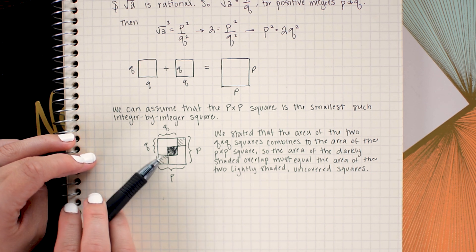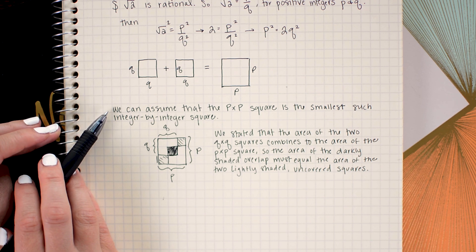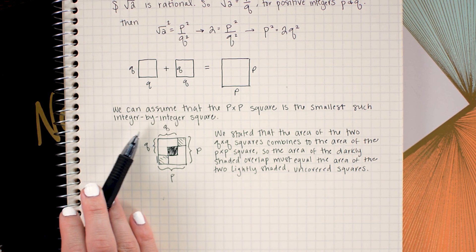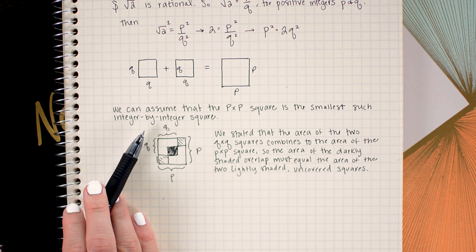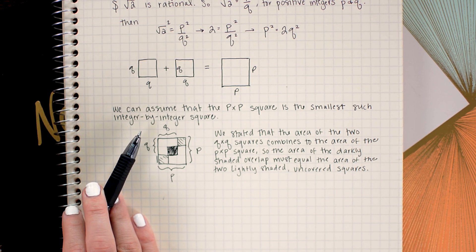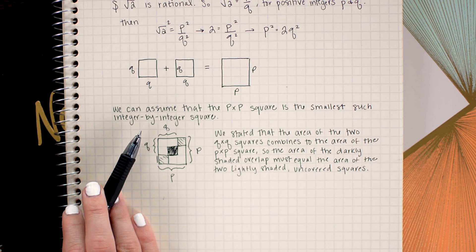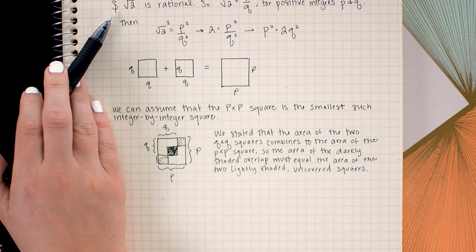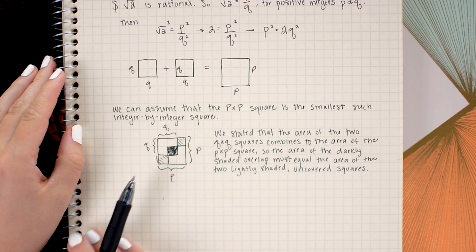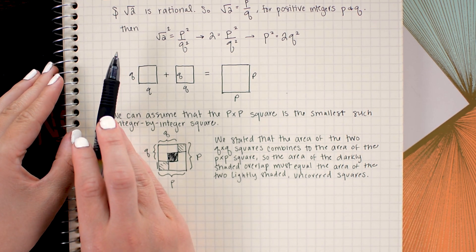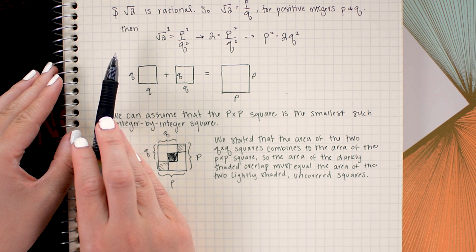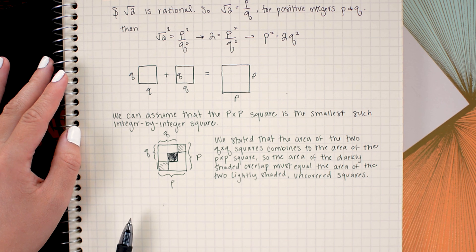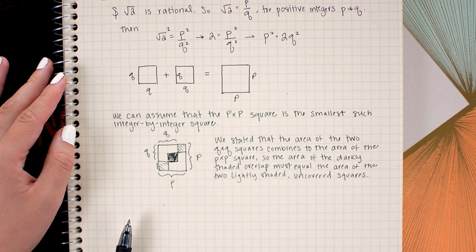This of course contradicts our assumption up here that our p by p square was the smallest such integer by integer square we could make of that type. So now that we have found our contradiction, we can assume that our original assumption was false and then state that square root 2 must be irrational. So the final step is just to write that out in words and that is what I'm going to do to conclude this proof.